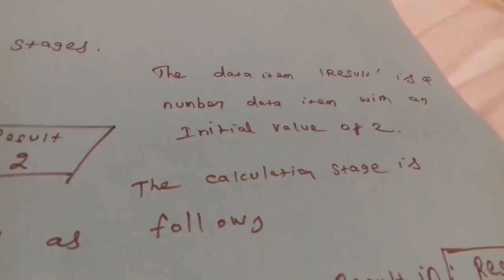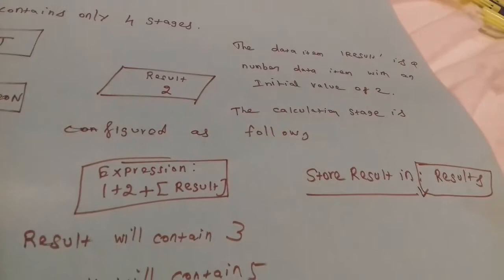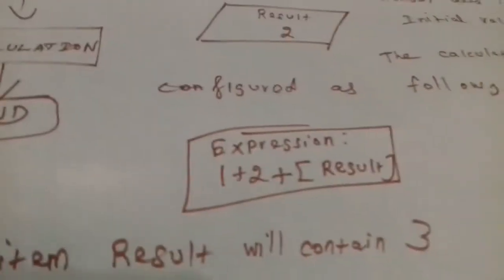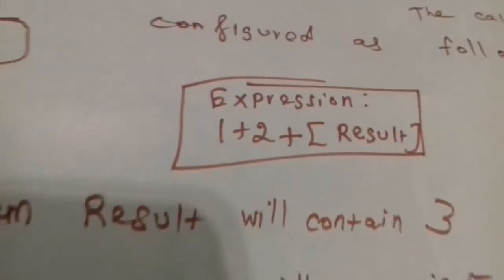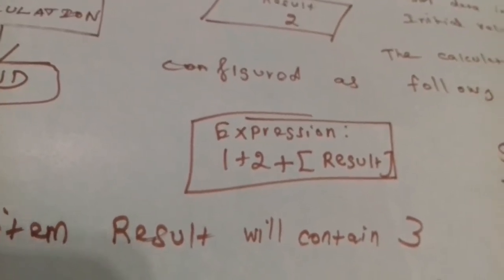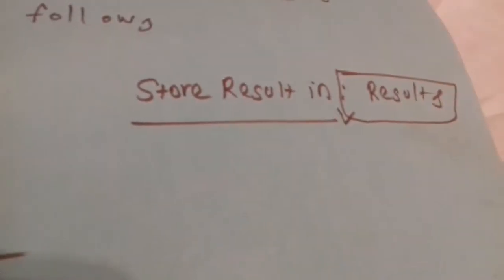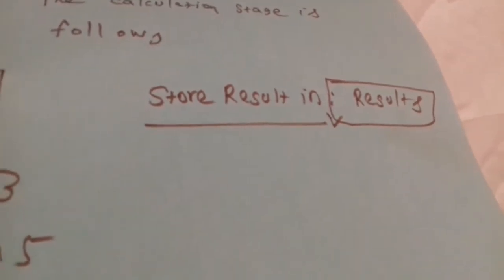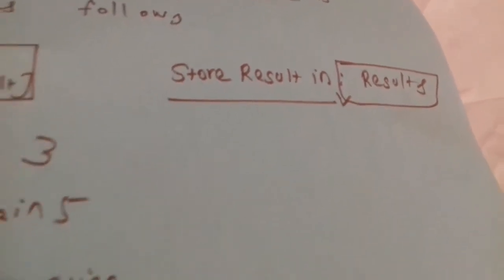The calculation stage is configured as follows: in the calculation stage properties, the expression is 1 + 2 + result, and it will store result in 'results'. Think how it will work.